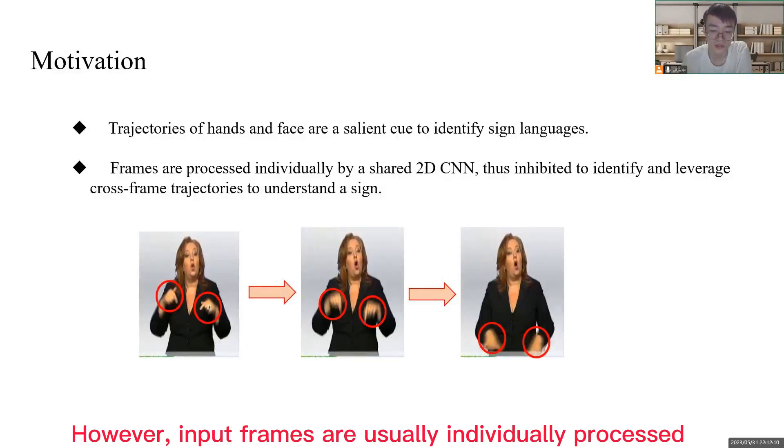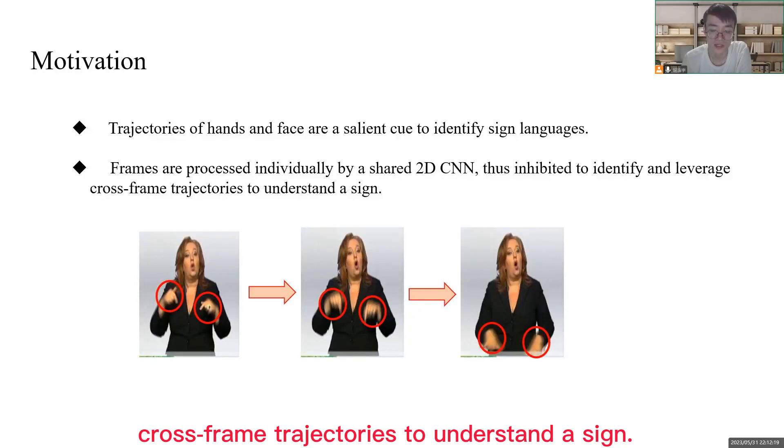However, input frames are usually individually processed by a shared 2D CNN, thus inhibited to identify and leverage cross-frame trajectories to understand the sign.